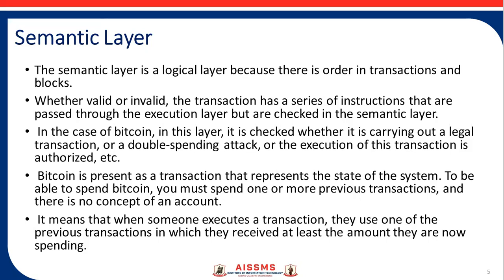In the case of Bitcoin, the semantic layer checks whether a transaction is a legal transaction, a double-spending attack, or whether the execution of the transaction is authorized. Bitcoin is presented as a transaction that represents the state of the system. To spend Bitcoin, you must reference a previous transaction, and there is no concept of an account. This means that when someone executes a transaction, they use one of the previous transactions in which they received at least the amount they are now spending.